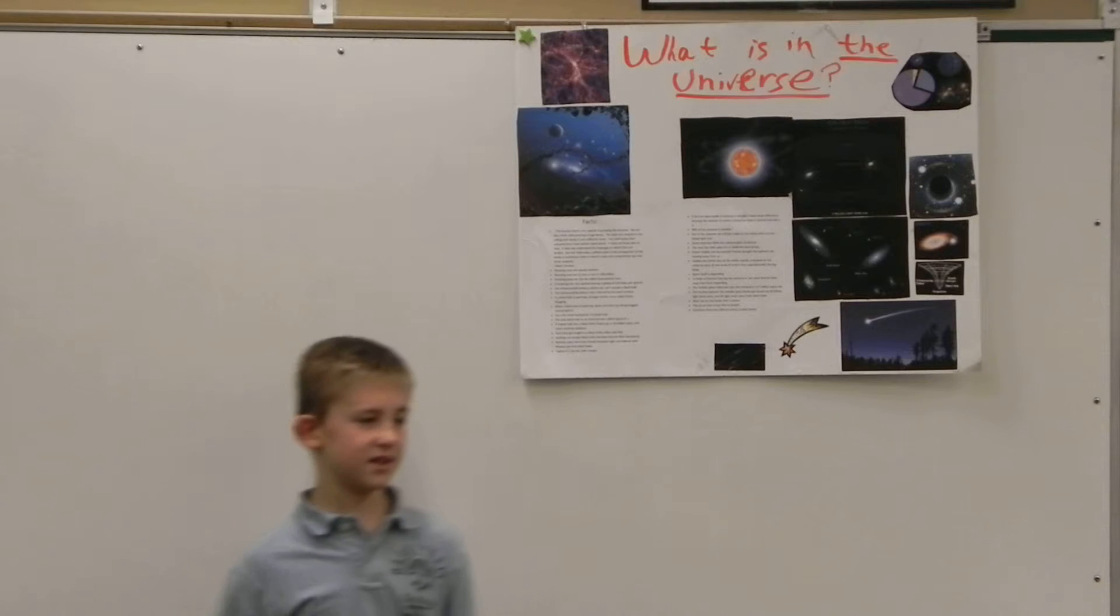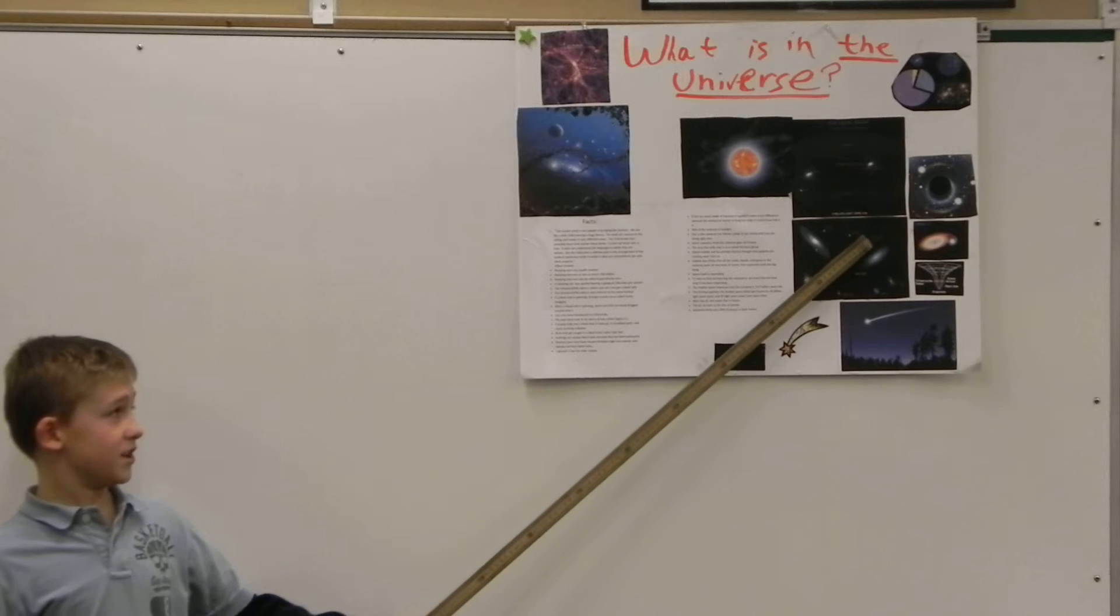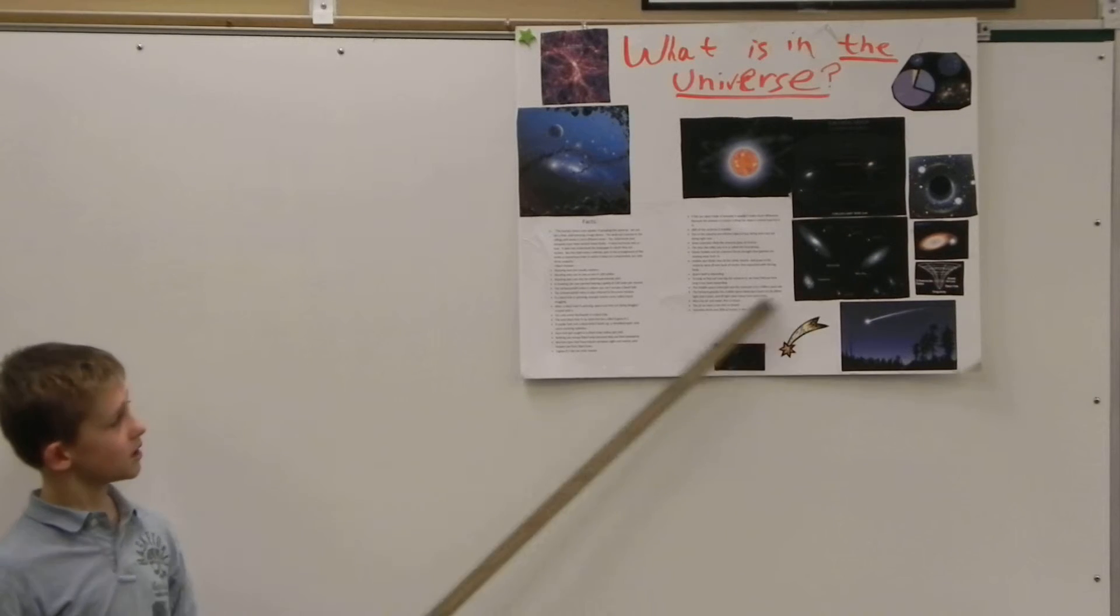The area of the Milky Way is in is called the local group. And I've got a diagram in the chart, right there.